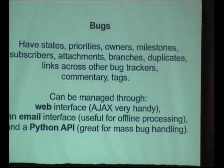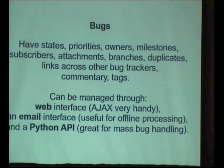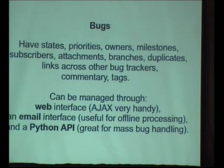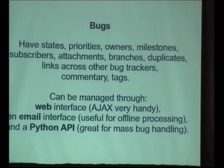Bugs — this is the big one for Launchpad. Bugs have states, priorities, owners, milestones, subscribers, and attachments, which might be patches or screenshots. Bugs can also be associated with branches. If in the commit message you use the defined syntax `LP: #bugnumber`, on pushing it will automatically be linked against that bug — quite useful as a maintainer to click through and see what had to change to fix a bug. Bugs have duplicates, and links across other bug trackers is arguably one of the most important selling features of Launchpad.